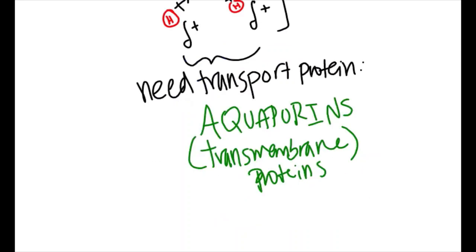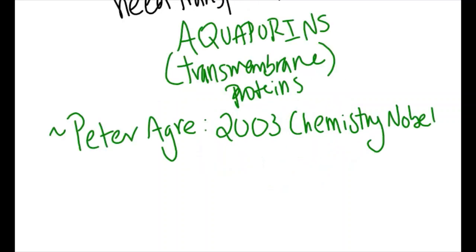Aquaporins are called transmembrane proteins because they are types of membrane proteins that span the entire cell membrane. The 2003 Nobel Prize in Chemistry was awarded to Peter Acker for the discovery of these proteins and their critical role in our bodies, such as in organs like kidneys.